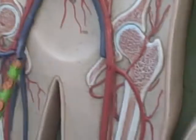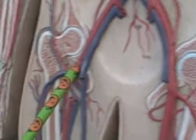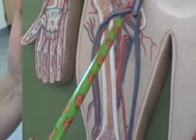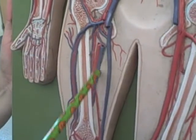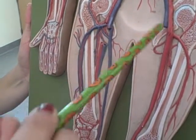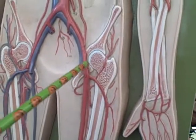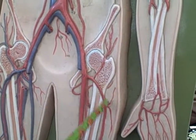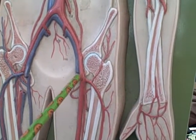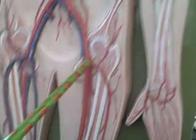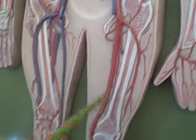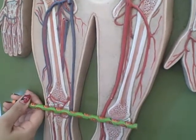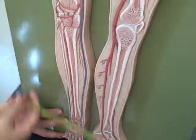And then your right common iliac is going to split into the external iliac or the internal iliac. And then past this region, they become one, and that's the femoral artery.